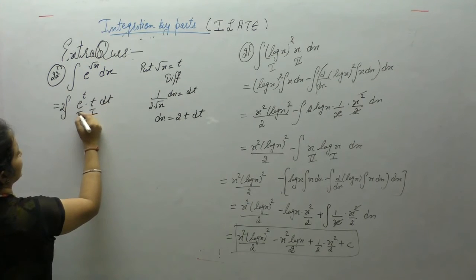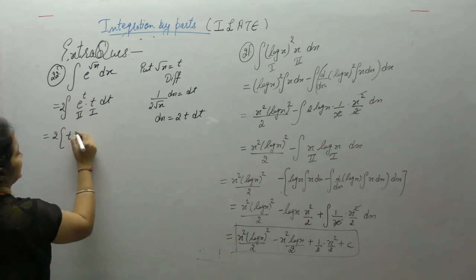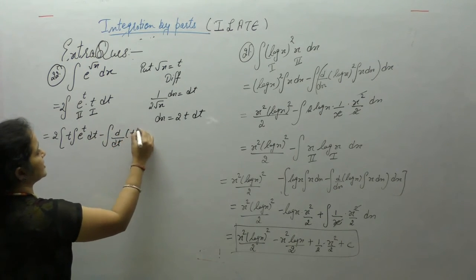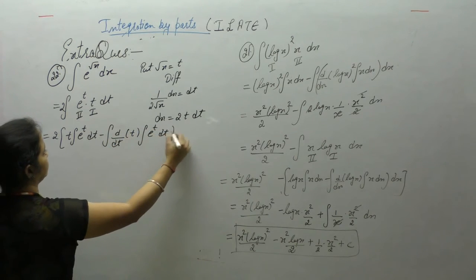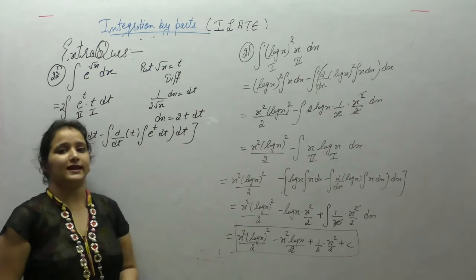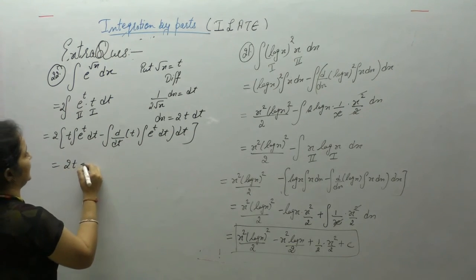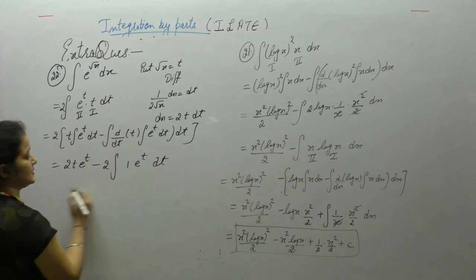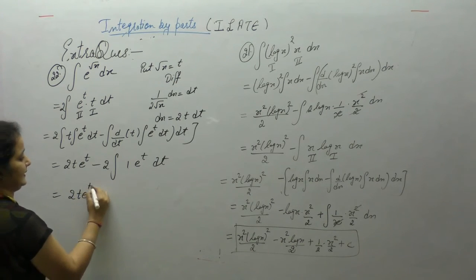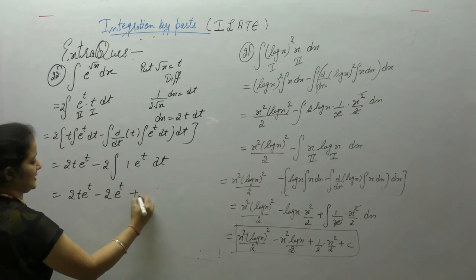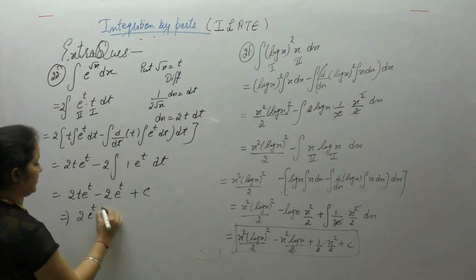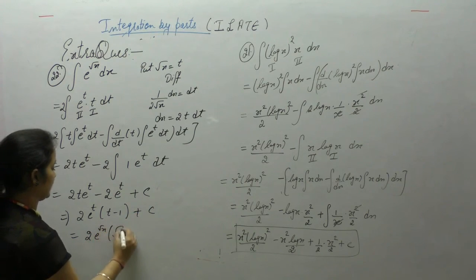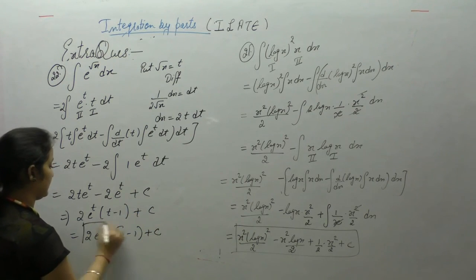Take algebraic as first and exponential as second. First as it is times integral of second, minus integral of derivative of first times integral of second. Integral of e^t is e^t. So we get 2t·e^t minus 2, derivative of t is 1, integral of e^t is e^t. This gives 2t·e^t minus 2e^t, which equals 2e^t(t minus 1). Substituting back t = √x: 2e^(√x)(√x minus 1) plus c.